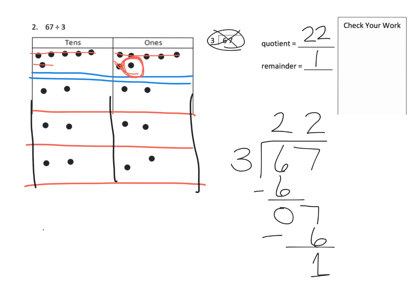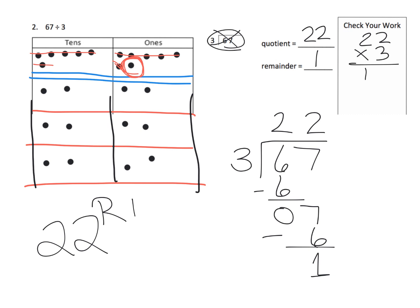We would say the answer is 22 remainder 1 — and that's still allowed. Now how do we check our work? We check by doing 22 times 3, which gives us 66. Then 66 plus 1 gives us 67. Since we end up with 67, that tells us we probably did it correctly.